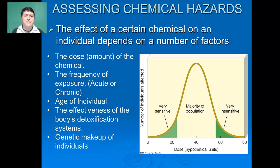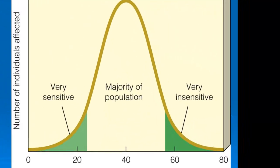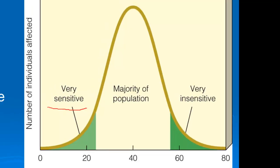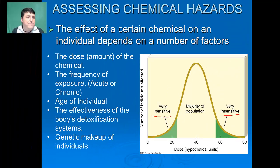The effects of chemicals on individuals really depend upon a number of factors. For example, the dose — how much of the chemical are you exposed to? Some individuals are very sensitive and only need a small dose for there to be an impact, whereas others may need a high dose. How often were you exposed? Was it a one-time acute exposure, or multiple exposures over a long period of time — a chronic exposure?